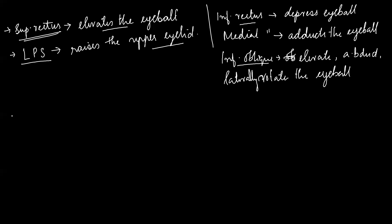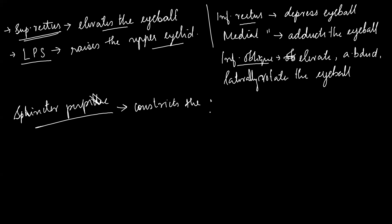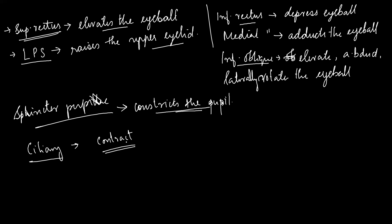The sphincter pupillae constricts the pupil, and with that constriction it reduces the amount of light entering the eye. The ciliary muscles contract and cause the lens to become more spherical, thus adapting the eye to short-range vision. Constriction of the pupil also reduces the amount of light entering the eye.